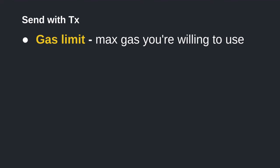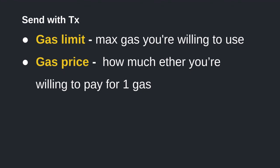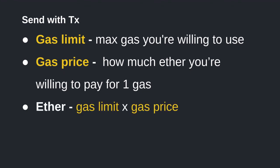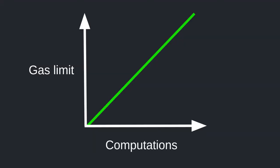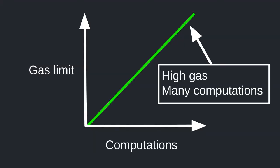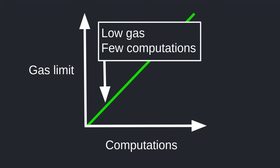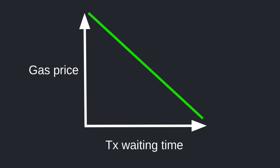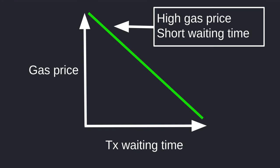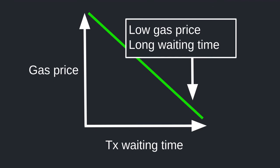When you send a transaction, along with your transaction data you need to send the gas limit — the maximum amount of gas you're willing to use for this transaction. The gas price is how much you're willing to pay for each unit of gas; you pay with ether, and your cost is gas limit times gas price in ether. The higher you set the gas limit, the more computation your transaction can process. The higher the gas price you set, the more ether you'll spend but your transaction will be processed faster. A lower gas price means less fee but a longer wait.